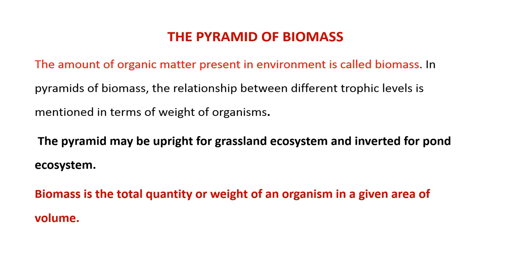Moving to pyramid of biomass: the amount of organic matter present in the environment is called biomass. Biomass is the total quantity or weight of organisms in a given area or volume. In pyramid of biomass, the relationship between different trophic levels is described in terms of weight of the organisms. This is an approximation — we take a sample weight rather than weighing each and every organism. The pyramid of biomass may be upright for a grassland ecosystem and inverted for a pond ecosystem.